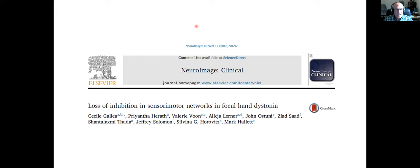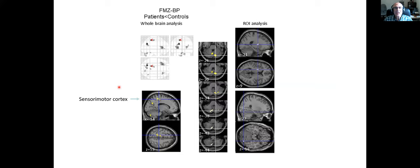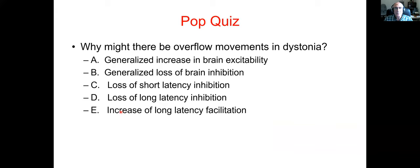If there is this loss of inhibition, one logical reason would be an abnormality of GABA, an important neurotransmitter in both the motor and sensory system. We did a PET study using the ligand flumazenil, which binds to the GABA receptor. One of the areas where GABA binding is less is in the sensory motor cortex — and also the cerebellum — suggesting there's a problem with GABA in the motor cortex that underlies these abnormalities of short inhibition.